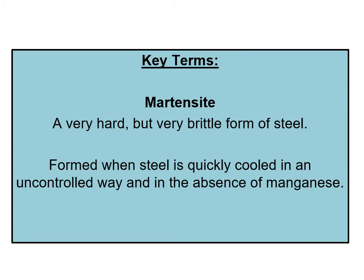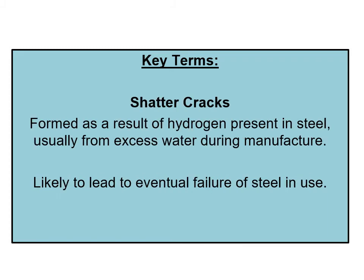Martensite is a very hard but very brittle form of steel. It's formed when the steel is quickly cooled in an uncontrolled way and in the absence of manganese. Shatter cracks are formed as a result of hydrogen being present in the steel, usually from the use of water during the manufacturing process, and are likely to lead to the eventual failure of the steel in use.